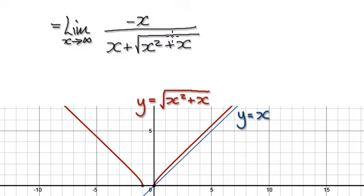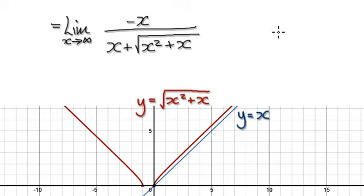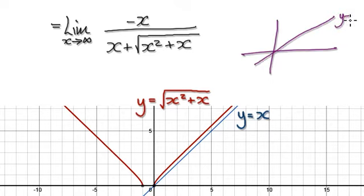If you get a graph plotter and plot this, that's this red line here. And then get a graph plotter and plot y equals x, that will give you this blue line here. If you zoom out, y equals x — really, this thing here becomes y equals x.